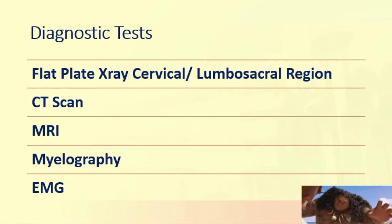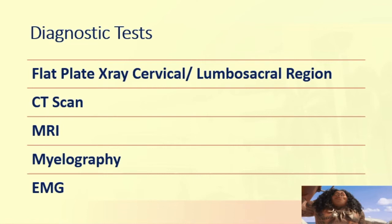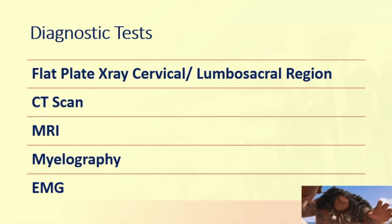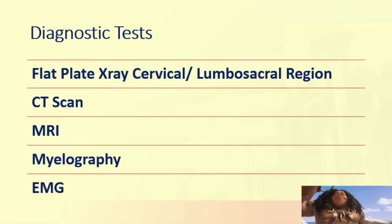Here are some diagnostic tests that can be done for the patient. A flat plate X-ray of the cervical and lumbosacral region would identify skeletal deformities and possible narrowing of disc spaces. A CT scan is used to identify disc rupture or protrusion and can provide a definitive diagnosis, although MRI is more detailed. There is also myelography, which uses contrast media, and electromyography to confirm which part of the spine is functioning well.